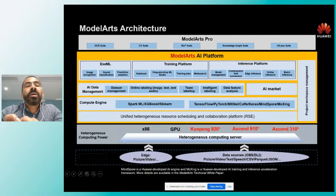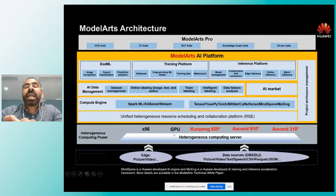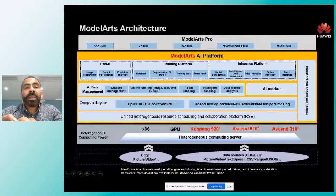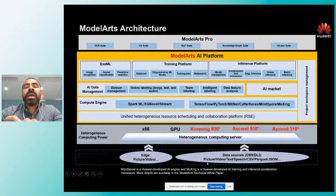El poder de cómputo disponible para estos modelos puede ser máquinas x86, GPUs para cargas más intensivas, pero también tenemos procesadores mucho más veloces que las GPUs de las líneas Kunpeng y Ascend, disponibles para un entrenamiento mucho más rápido y efectivo en ModelArts. Desde el punto de vista de datos, podemos tomar información desde el Edge —videocámaras, micrófonos— y desde fuentes de datos tipo bases de datos o plataformas de Big Data, en cualquiera de los formatos de la industria: imágenes, video, CSVs, Excel, Parquet, JSON, etc.